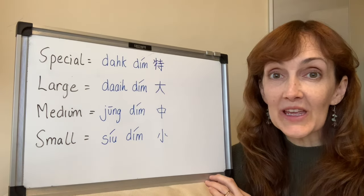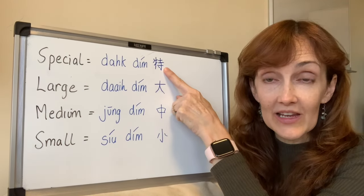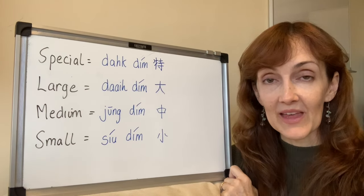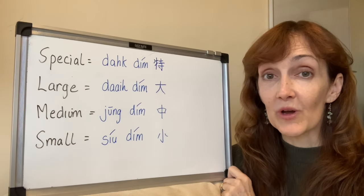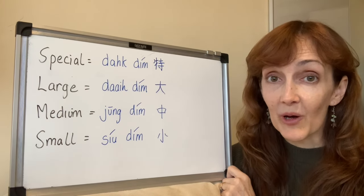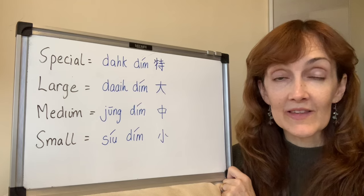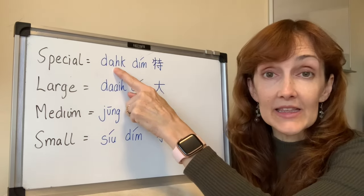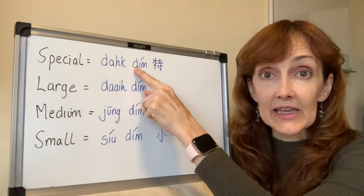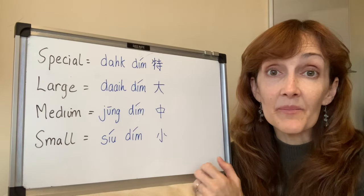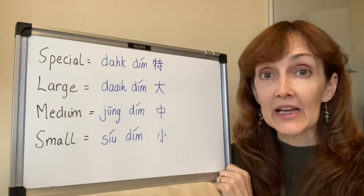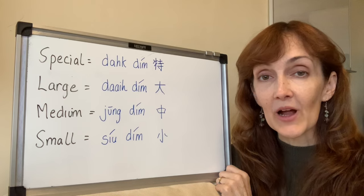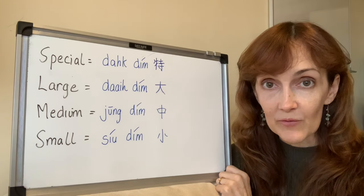If you're looking at this character here, this refers to the special dim sum. And for that, you have the privilege of paying the most — they're the most expensive ones. The way to say it is 特點 (dat dim). That dim are the most expensive ones.